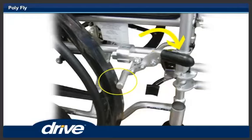Step 18. To engage the wheel lock on the 24-inch rear wheel, push the wheel lock forward to lock the wheel.